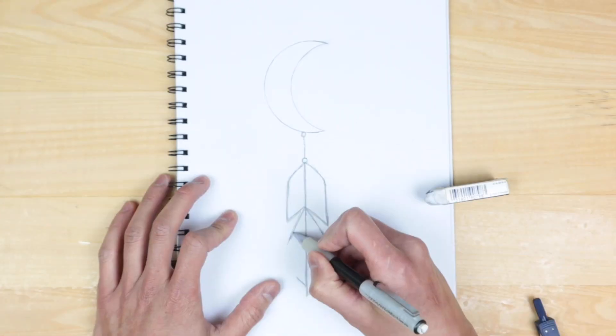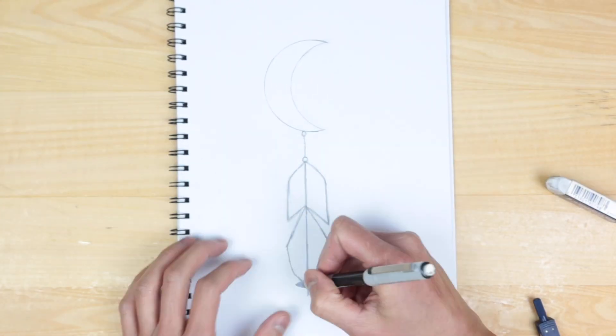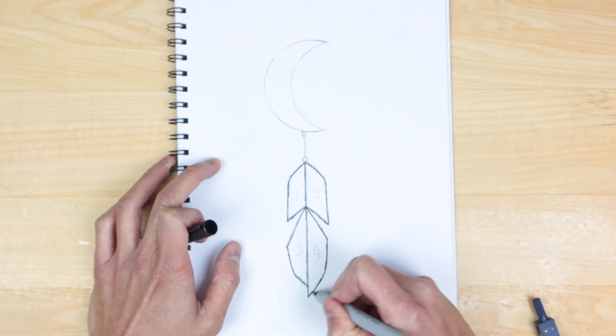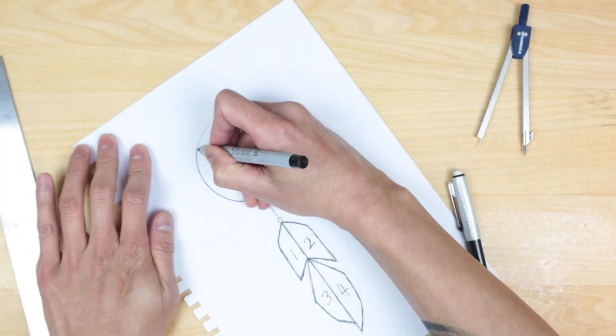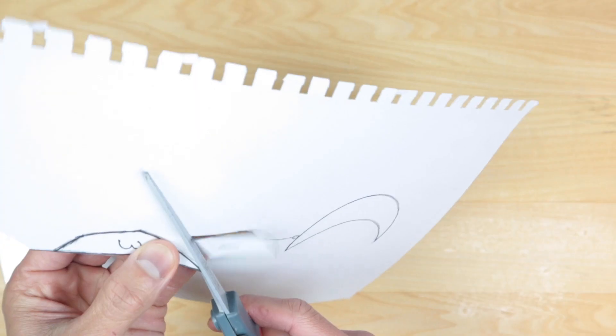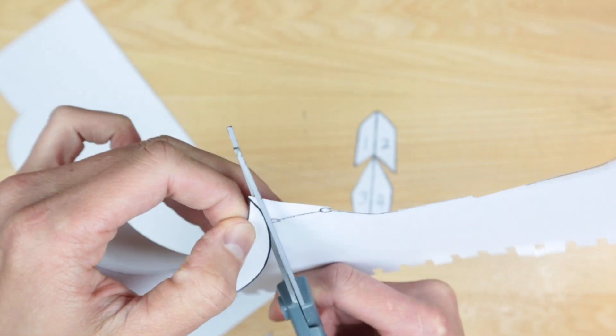Feel free to print out one of my designs for this project and you can make it as big or as small as you'd like. Let's number each of these pieces. Next, let's cut up these numbered sections and it's also a good idea to make a copy of this so you have the original drawing to refer back to.